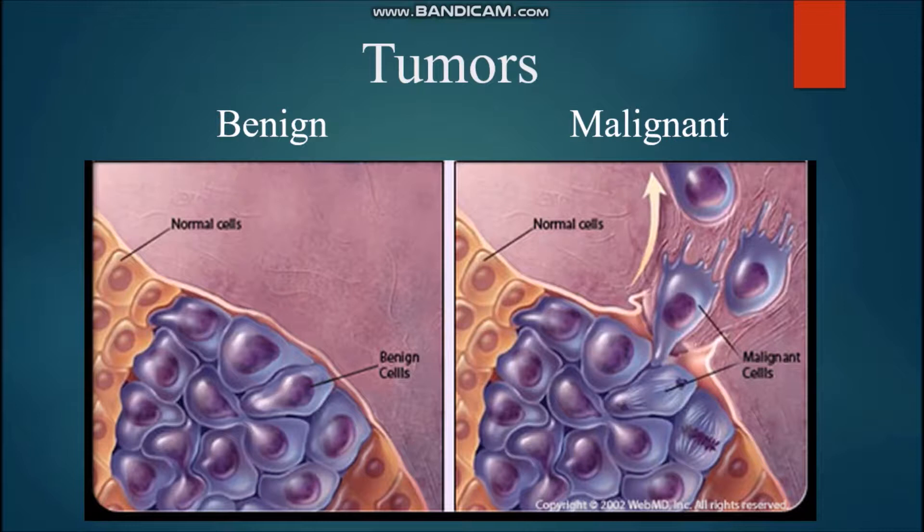Now before we get to the nanorobots, it's important to know how tumors work. There are two main types of tumors, benign and malignant. Benign tumors are not cancerous, don't cause immediate harm to the body, and can't spread to other parts of the body. They just keep growing bigger and bigger within the body.